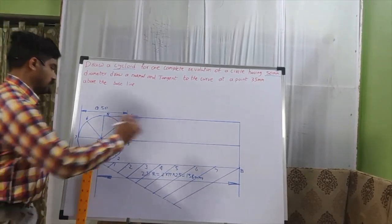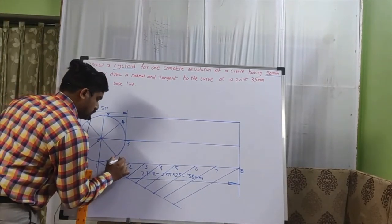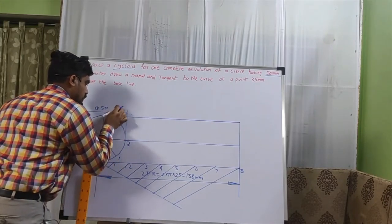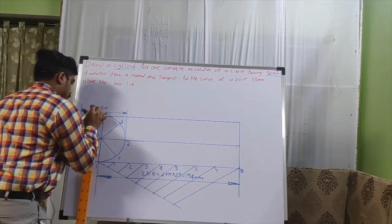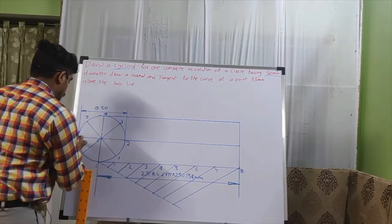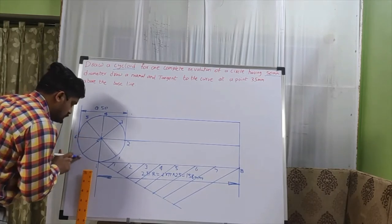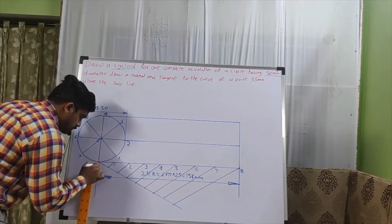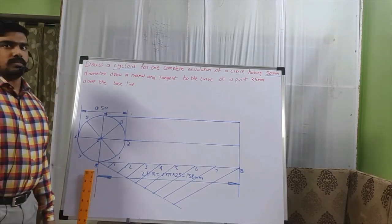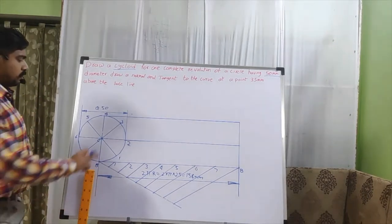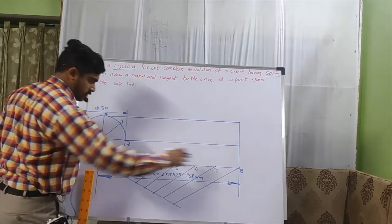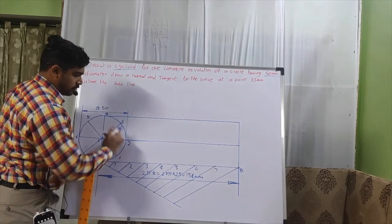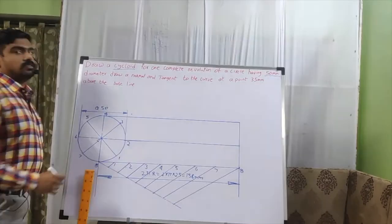Now renumber the divisions: 1, 2, 3, 4, 5, 6, 7, 8. Now we can easily understand the problem — as the circle rotates on the plane, point 1 coincides with division 1 on the base, point 2 with division 2, and so on, vice versa up to 8.